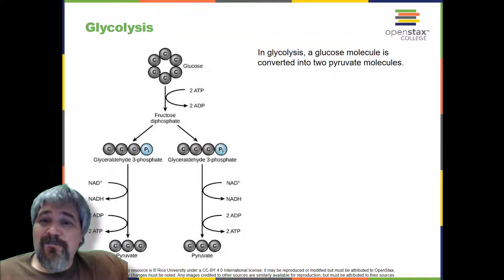You have read that nearly all of the energy used by living things comes to them in the bonds of the sugar glucose. Glycolysis is the first step in the breakdown of glucose to extract energy from cell metabolism. Many living organisms carry out glycolysis as part of their metabolism. Glycolysis takes place in the cytoplasm of most prokaryotic and all eukaryotic cells.